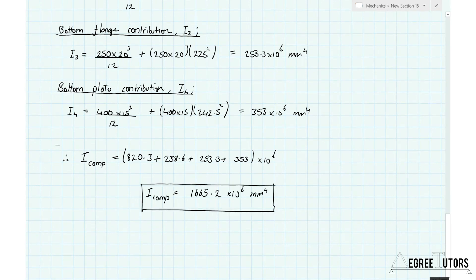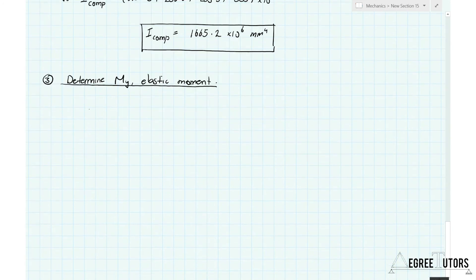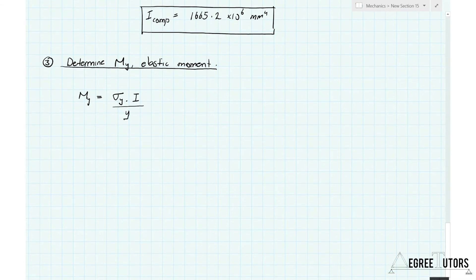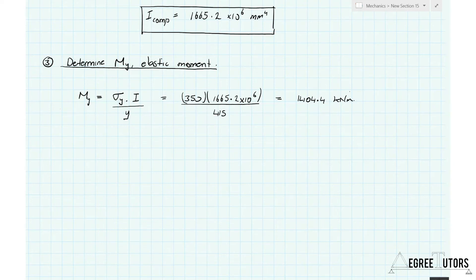It's now straightforward to determine the elastic moment using the engineer's bending equation: M_y = σ_y × I / y, where σ_y is the yield stress, I is the second moment of area about the neutral axis, and y is the distance from the neutral axis to the extreme fiber. Plugging in the numbers, the yield moment — the elastic moment — is 1404.4 kilonewton meters. At this moment, the stress at the top of the beam section equals the yield stress of 350 N/mm².